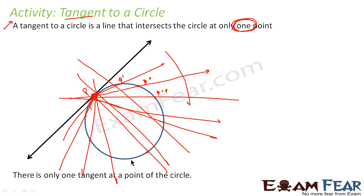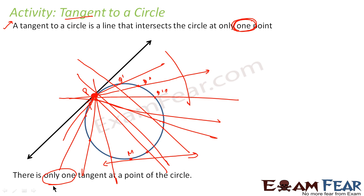So if we are talking about a point M on the circle, at this point you can have only one tangent. This is my tangent at point M. Only one tangent is possible at a given point on a circle.